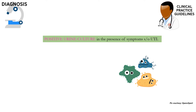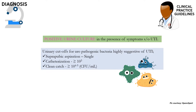The diagnosis of UTI should be based on a positive urine culture in the presence of suggestive symptoms. The urinary cutoffs for uropathogenic bacteria highly suggestive of UTI are: a single bacterium in a suprapubic aspirate sample, more than or equal to 10³ bacteria in a sample obtained by catheterization, and more than or equal to 10⁴ bacteria in a clean catch sample.